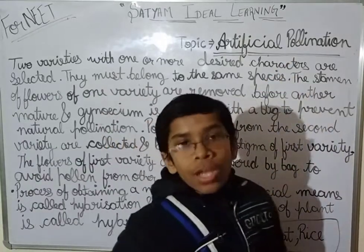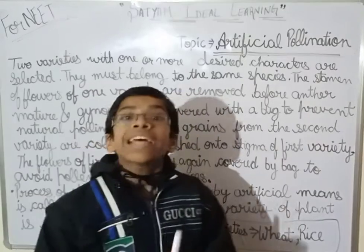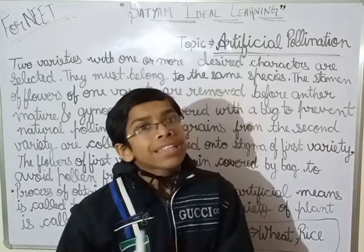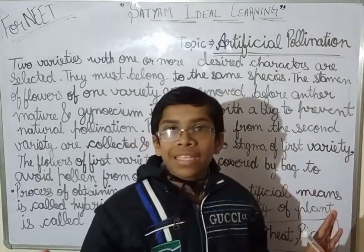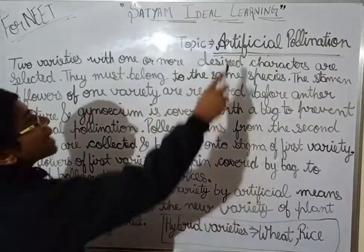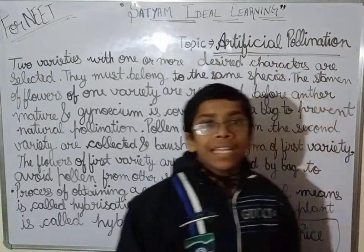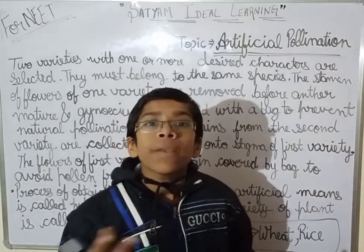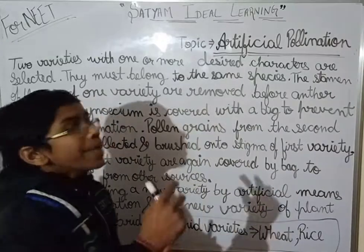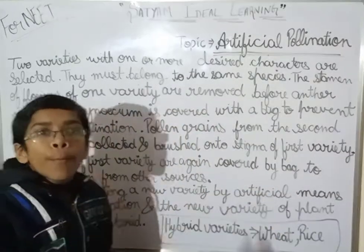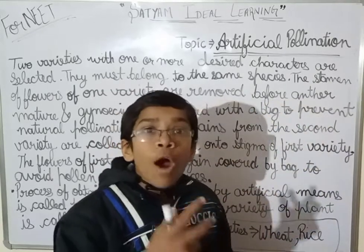As we already know, pollination is the process in which the pollen grains are transferred from the anther to the stigma. Artificial pollination means pollination is occurring by artificial means — we are making a plant undergo pollination so that the variety formed after that can be better.